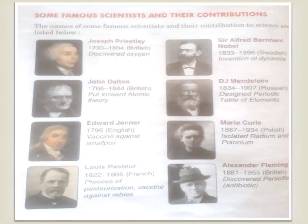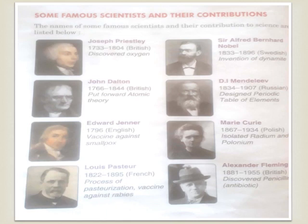Alfred Bernhard Nobel invented dynamite, which is an explosive. Mendeleev designed the periodic table of elements — a tabular table in which all the elements such as oxygen, hydrogen, iron, gold, and copper are arranged in columns according to their atomic number and atomic weight. Mary Curie isolated radium and polonium, which are radioactive substances that give out radiations.